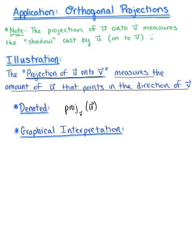Let's think about a graphical interpretation of what this might look like. Here's our initial point, and we can say that this is our vector u, and then somewhere down here is our vector v. These two vectors are intersecting at some angle theta. Let's now imagine that there is some light source above that is casting light onto our two vectors.